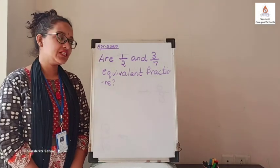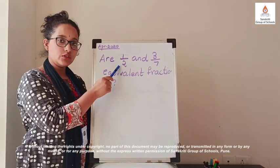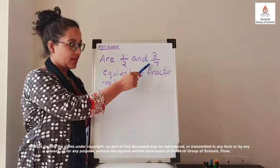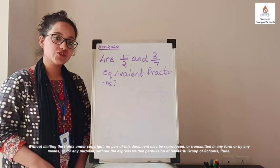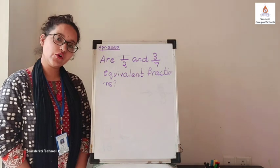Let us try to solve this question. Are 1 upon 2 and 3 upon 7 equivalent fractions? How can we find whether they are equivalent fractions or not?